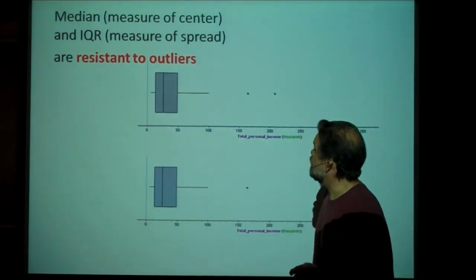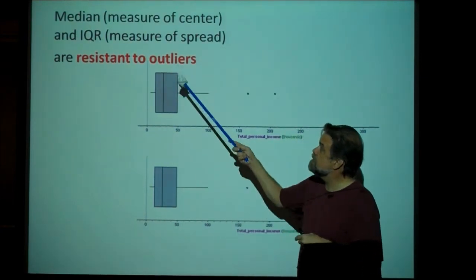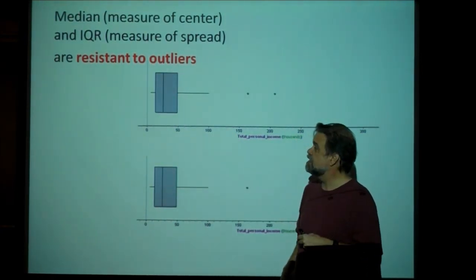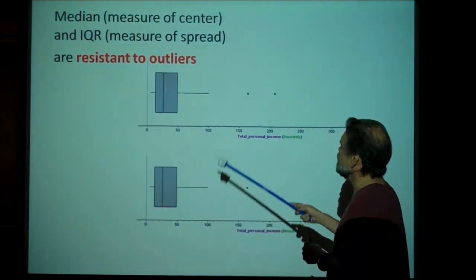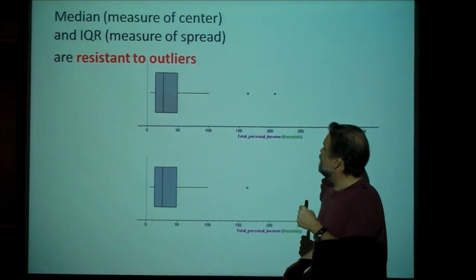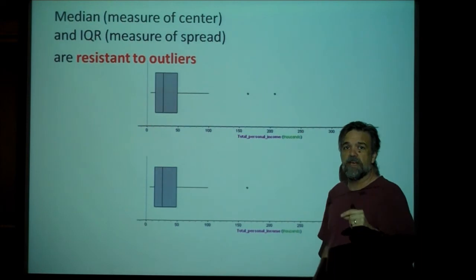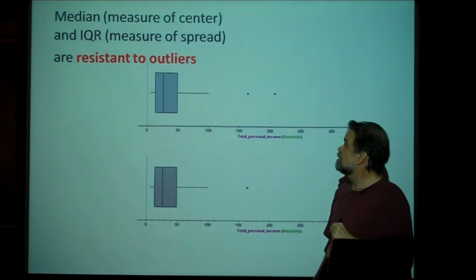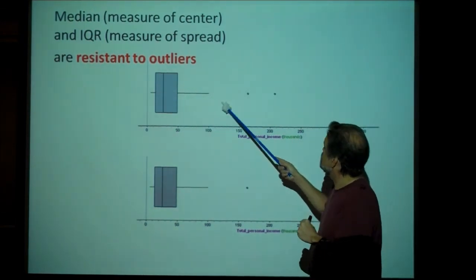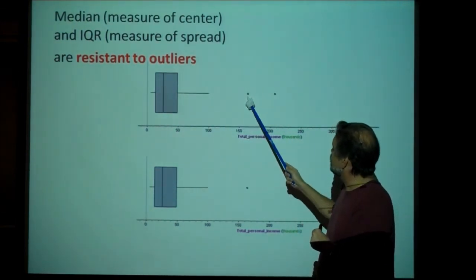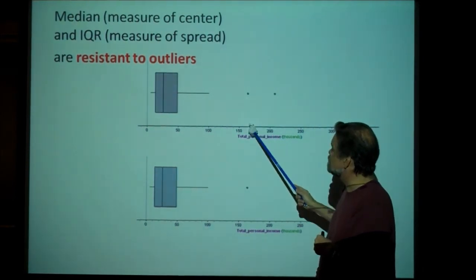Now, box plots, one thing that's good about box plots, and one thing that's good about using the median and the IQR to measure center and spread, is that they're resistant to outliers. And this is what I mean by that. Here we have box plots. This is also about the same 98 people, but this time, instead of looking at their age, we're looking at how much money they make. The income that they have. And so, here's a box plot that shows that. Here's a couple of outliers here.